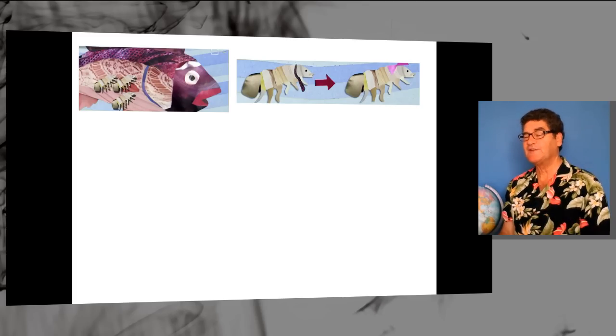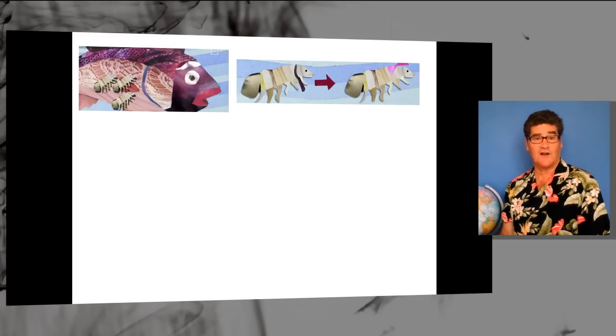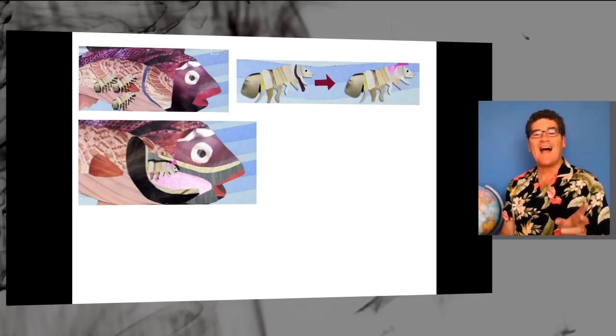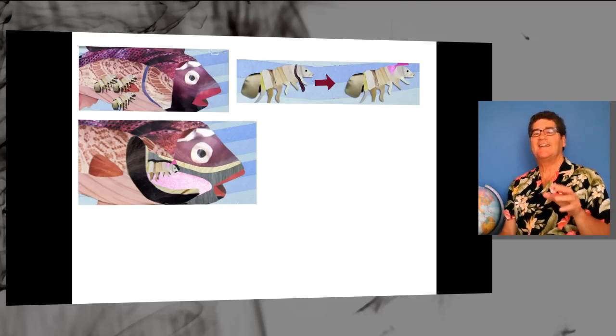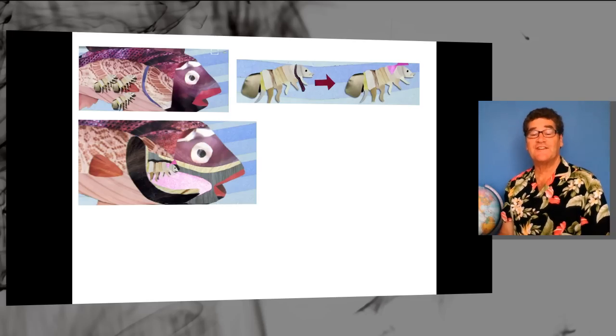But the males can become females, and one particular female can grow quite large inside the fish's mouth. And it attaches itself to the back of the fish's tongue.